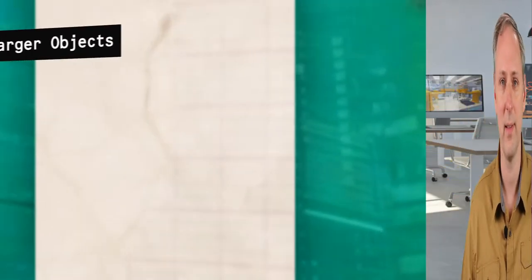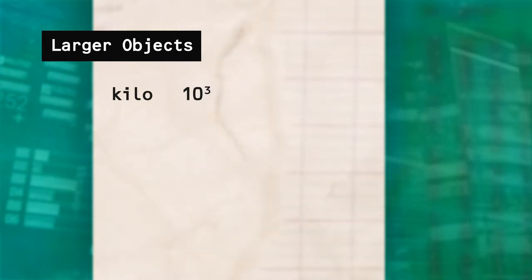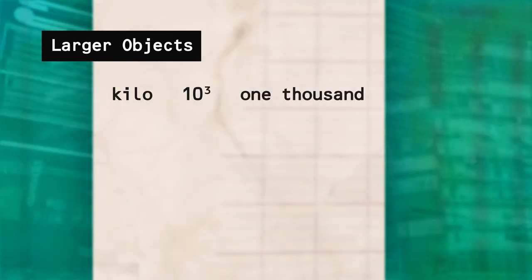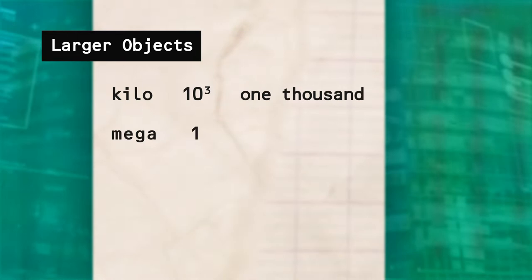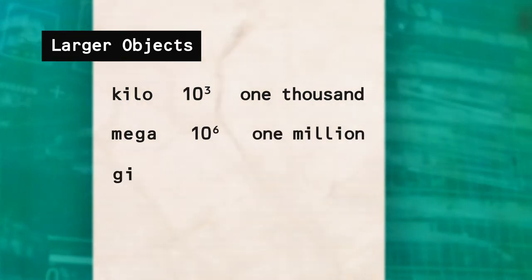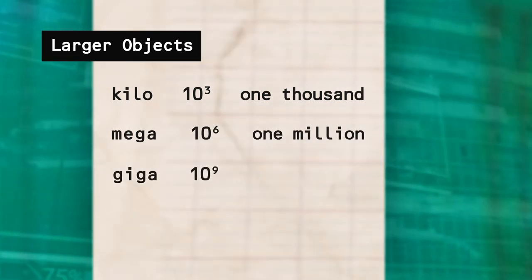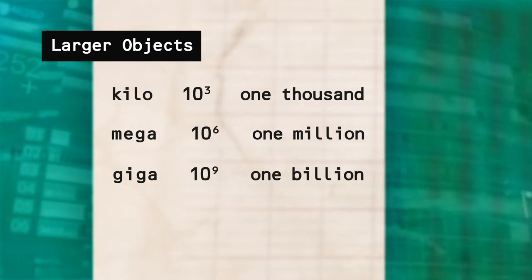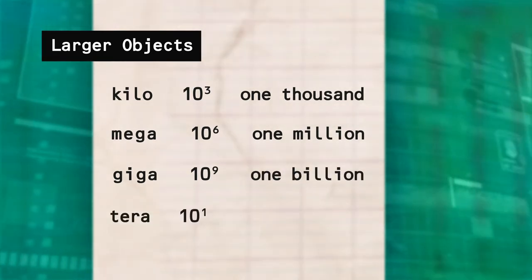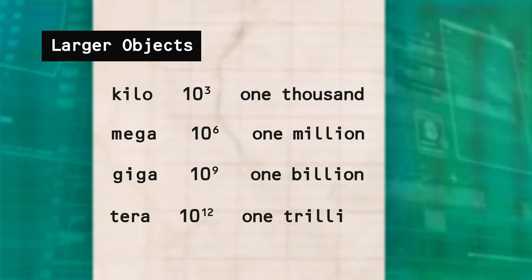For larger objects, there's another set of prefixes. We use kilo to indicate 1 times 10 to the third power or one-thousand. Next comes mega, meaning 1 times 10 to the sixth or one-million. Then giga, at 1 times 10 to the ninth or one-billion. Then tera, meaning 1 times 10 to the twelfth power or one-trillion.